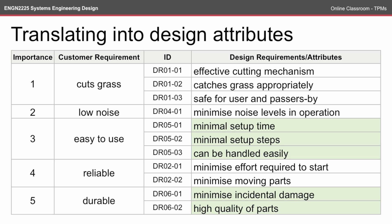It should also be handled easily, so you don't want something that's too heavy or too difficult to move around the garden. And at number five, durable: we want to minimize incidental damage, so we don't want it to crack if we run into something, and we also want to use high quality parts to increase durability. This gives us a complete table of the design attributes for the five most important customer requirements. There may be more if you wanted to go into more detail, but this serves as a good start.